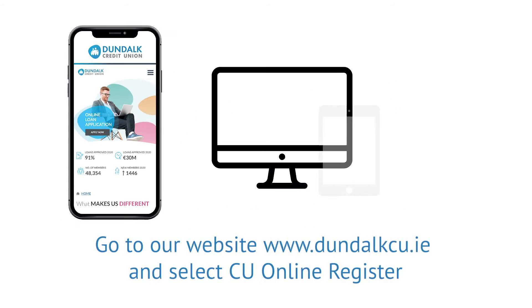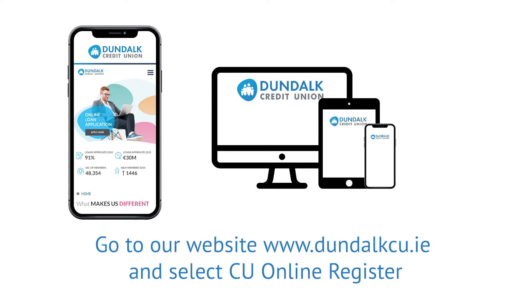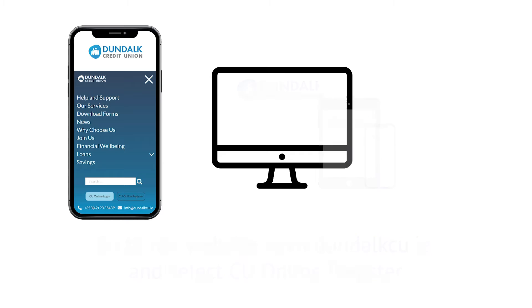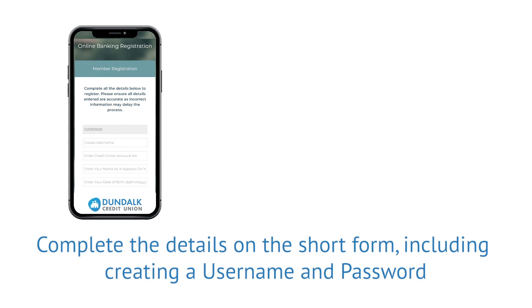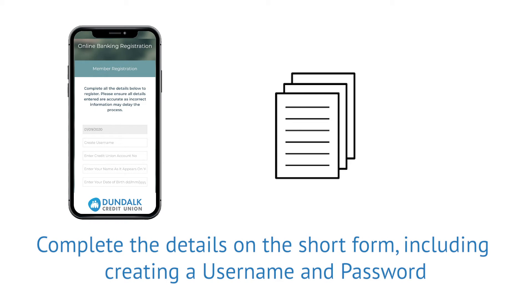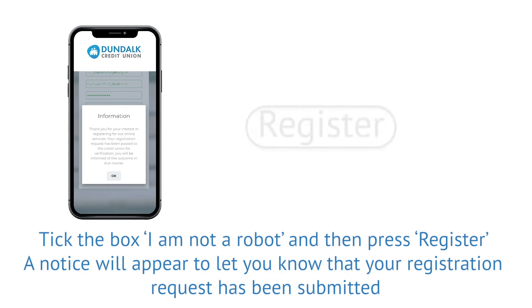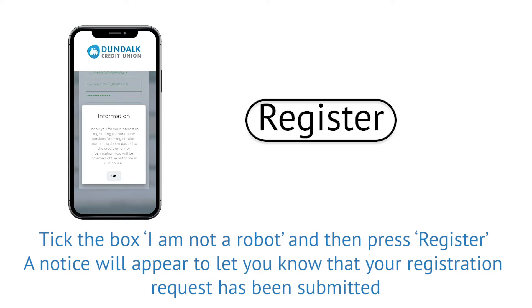Go to our website www.dundalkcu.ie and select CU Online Register. Complete the details on the short form, including creating a username and password. Please record the username and password and ensure these details are kept secure for future reference. Tick the box 'I am not a robot' and then press Register.